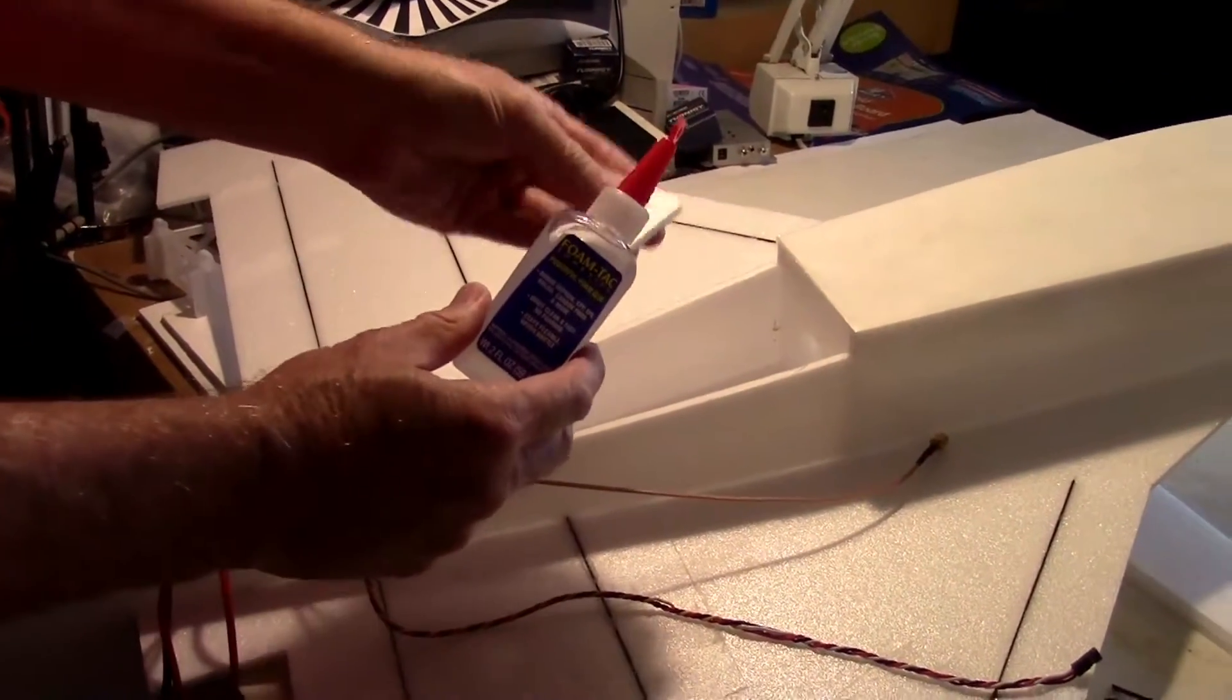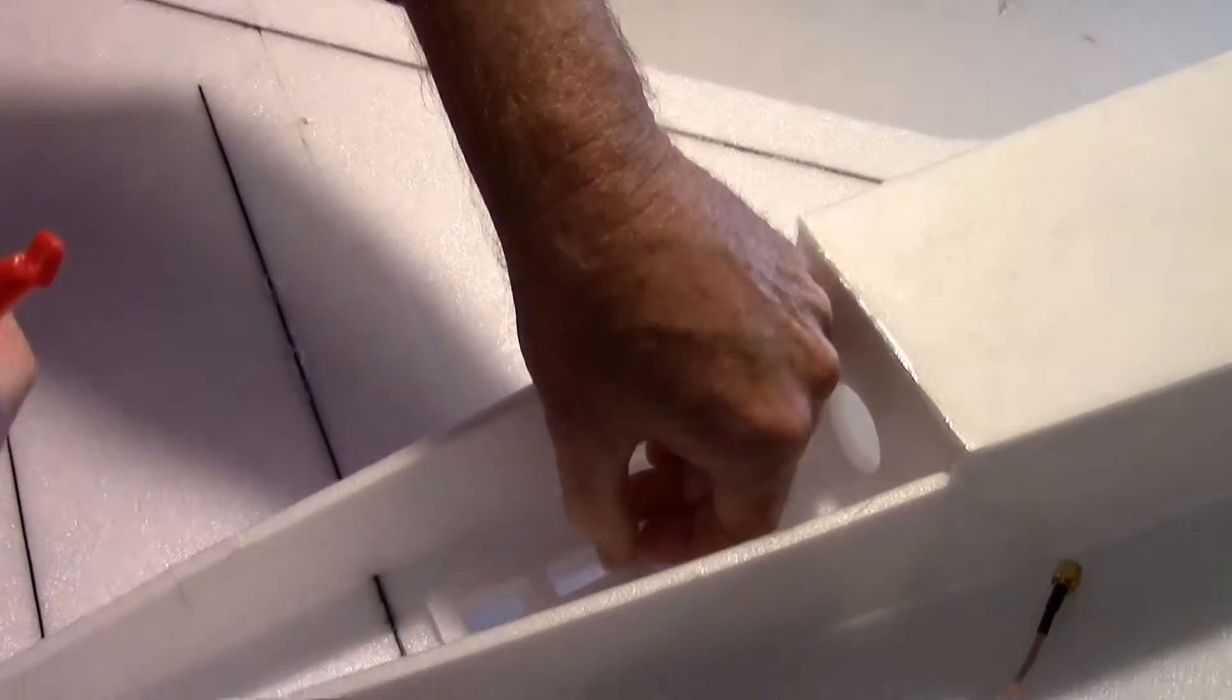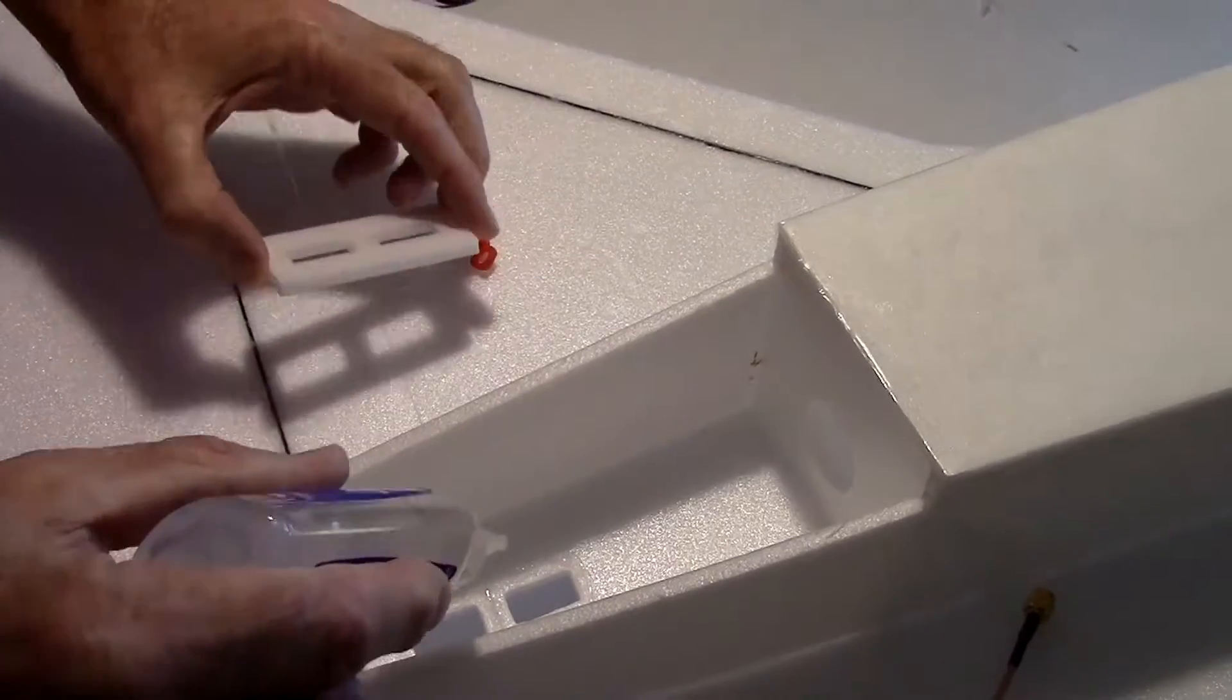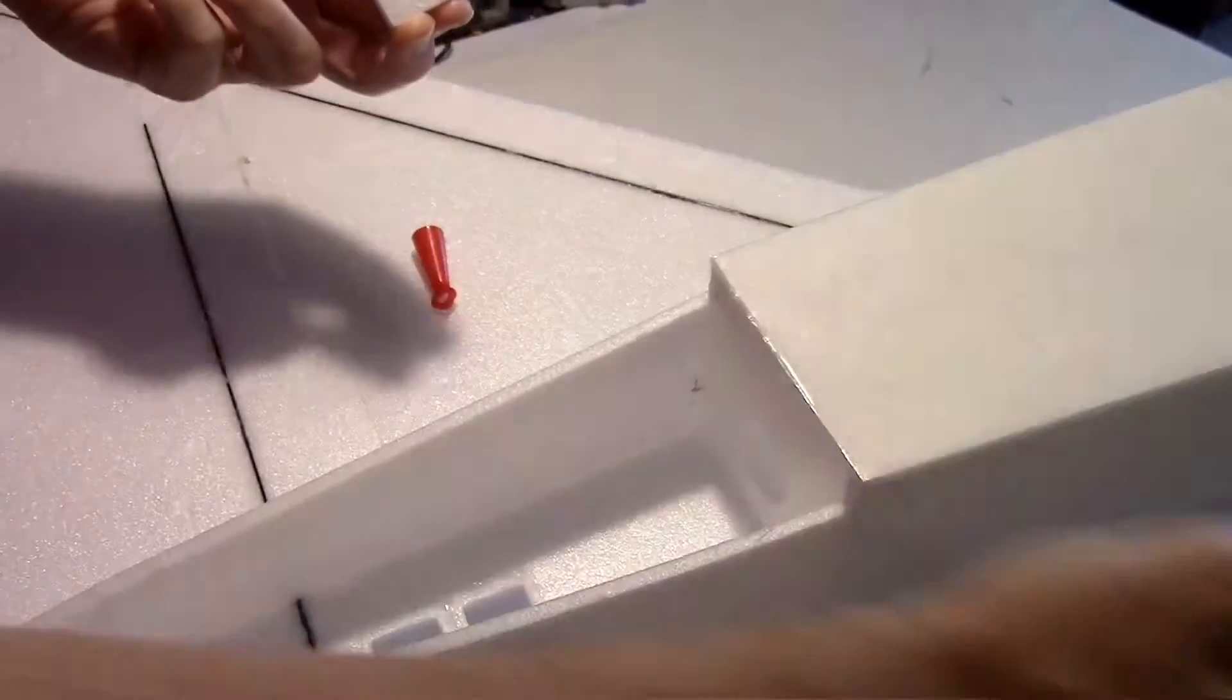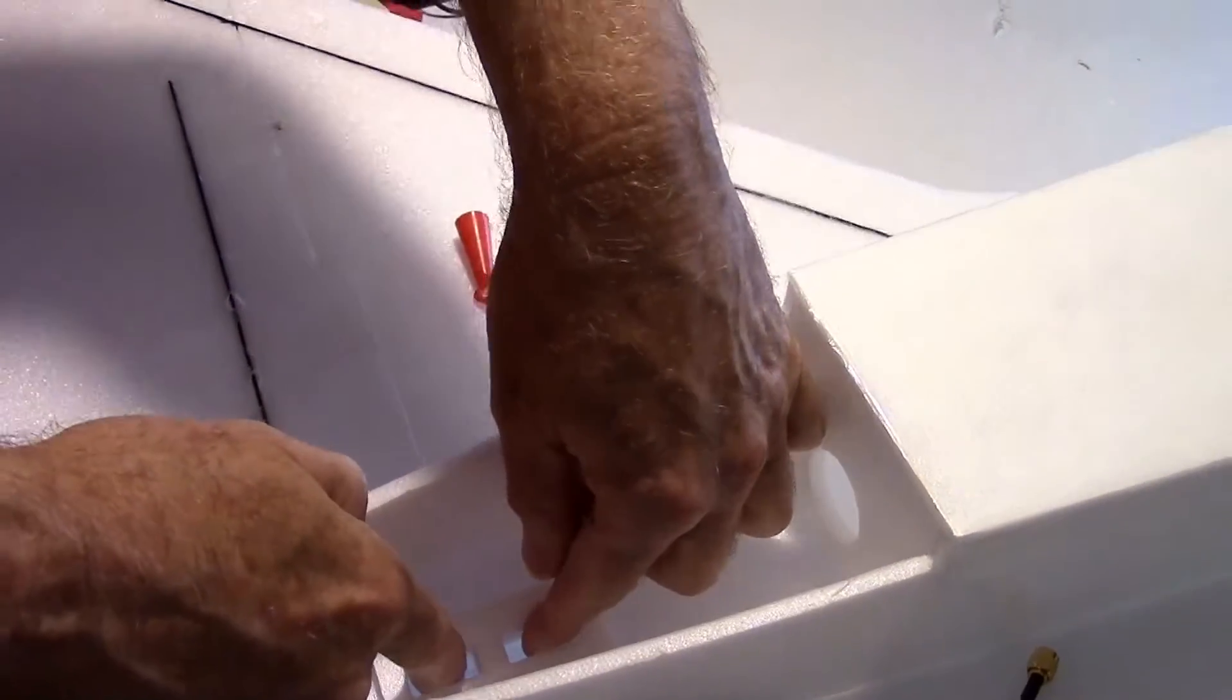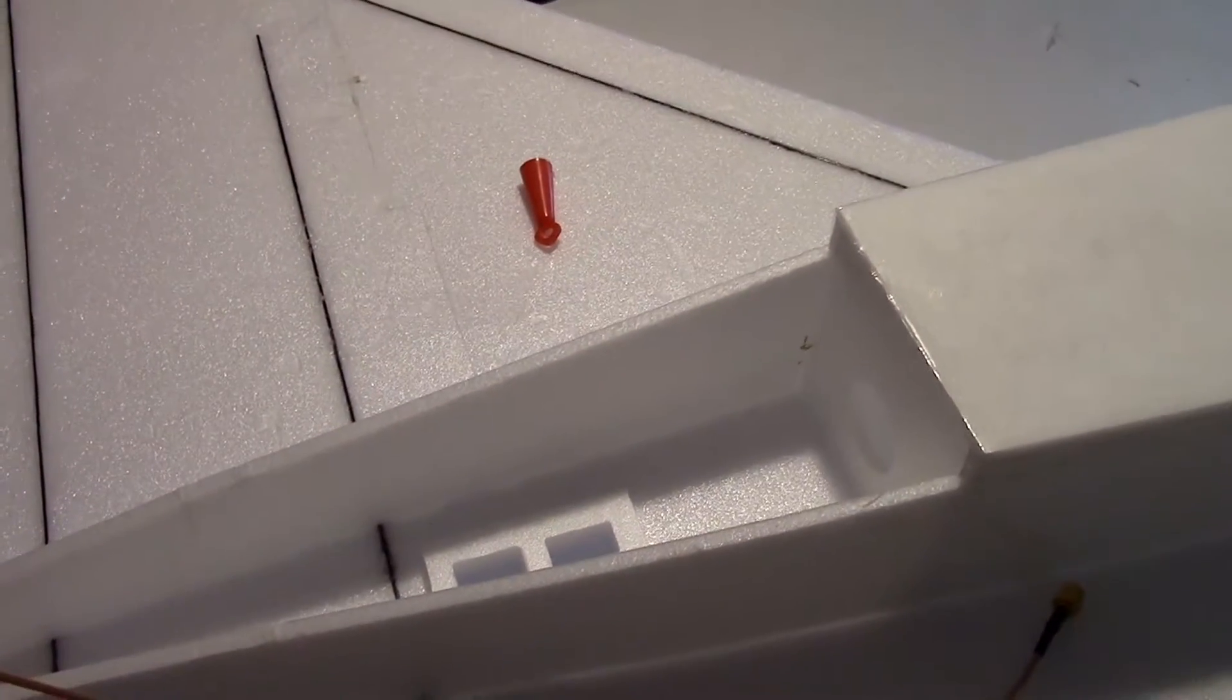For this part, I'm going to use foam tack so I can slide this around a little bit. It's got to go down in this hole and sit right like that. I'm going to put a little foam tack on there, going around the holes, and then I'm going to put some on the piece. The foam tack lets me slide it around a little bit so that I can get it in position better, rather than use CA. I might take it off once and let it tack up and put it back.